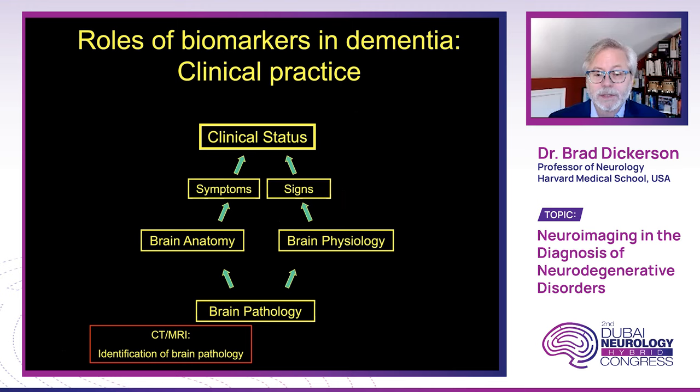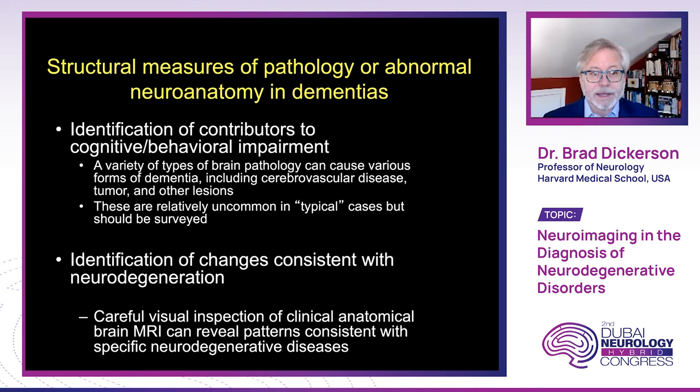Let's start with the most straightforward identification of brain pathology through CT or MRI. We'll focus on Alzheimer's disease, but there are many other causes of dementia and we have to keep in mind a broad differential diagnosis. Structural measures can identify contributors to cognitive or behavioral impairment such as cerebrovascular disease, tumor, or other lesions — relatively uncommon in a typical Alzheimer's presentation, but should be surveyed in any case.